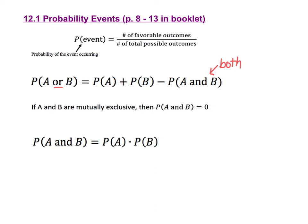The other formula that we're going to use is probability of A and B. When you see the word 'and,' remember that 'and' means multiply. So the probability of A and B is equal to the probability of A times the probability of B.